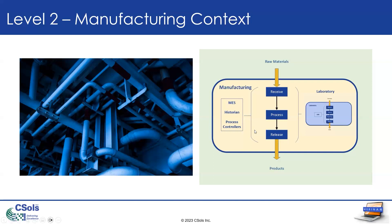On the left-hand side, we have some of the typical systems we see in the manufacturing arena, such as manufacturing execution systems (MES), process historians, and process controllers. And on the right, a representation of our laboratory and our LIMS system, tied in there — representing the integration across all these various elements.